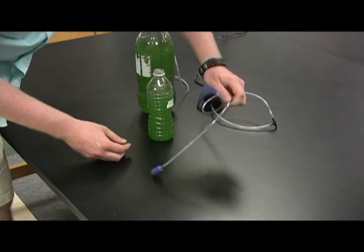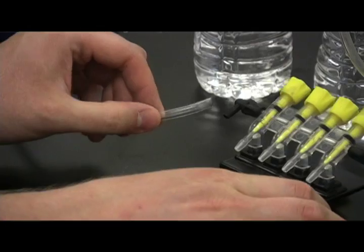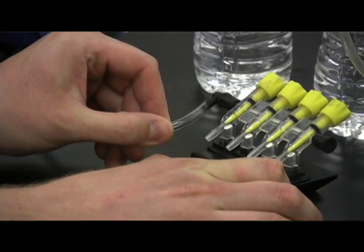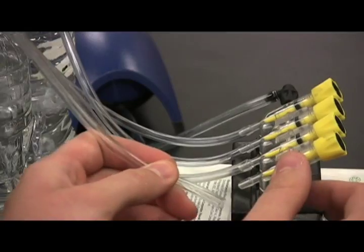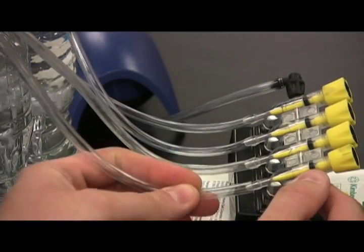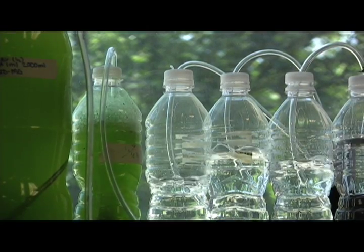To set multiple bottles up in parallel, a gang valve is ideal. We connected the gang valve to the air line running from the air pump, then connected the bottle's air lines to the valve. We opened the valves to allow flow to both bottles. The bottles were then placed in the window, and the setup was complete.